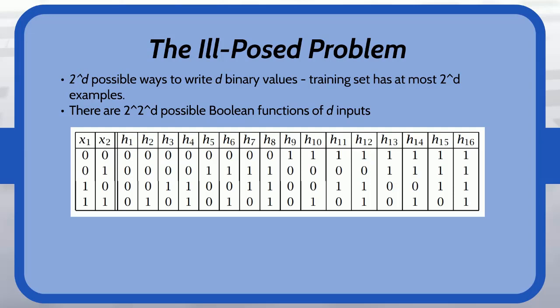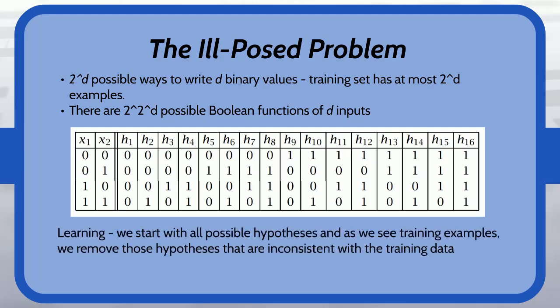And then there are going to be 2 to the 2 to the d possible boolean functions of d inputs. So in this particular scenario since we have two inputs we are going to have 16 individual unique hypotheses and any one of them could be correct. So the process of learning is going to be where we start with all the possible hypotheses, the 16 you have here, and as we see training examples we are going to remove those hypotheses that are inconsistent with the training data.